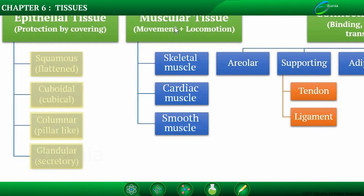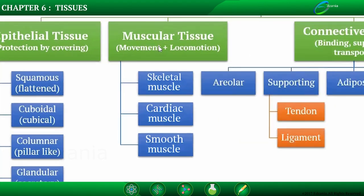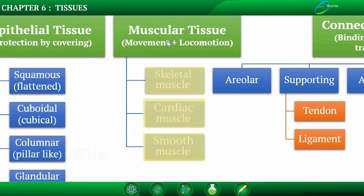The types of animal tissues include epithelial tissue — squamous, columnar, and glandular epithelium. Then muscular tissue, which provides posture, body support, structure, mechanism of contraction, relaxation, and attachments. On the basis of function, muscular tissue is of three types: skeletal muscle, cardiac muscle, and smooth muscle.